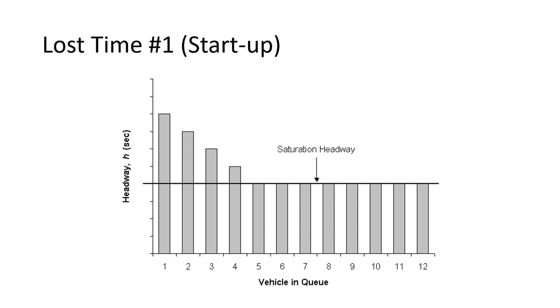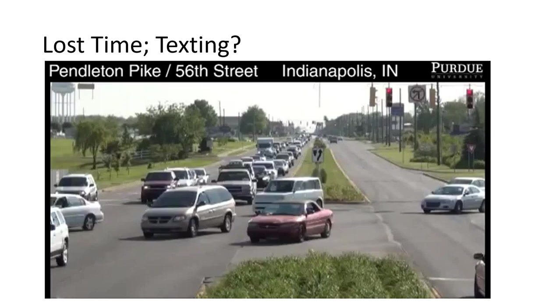These are the people who believe in short cycle lengths. Once you get that accordion effect, you should start cutting the phase and give the next phase its green time, because those cars will be all tightly bunched and more efficient as they move through.